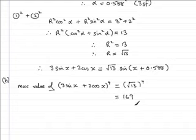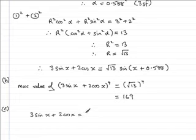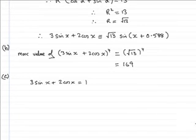That's part B done and we now move to the final stage, part C. We've got to solve the equation: 3sin x + 2cos x = 1.